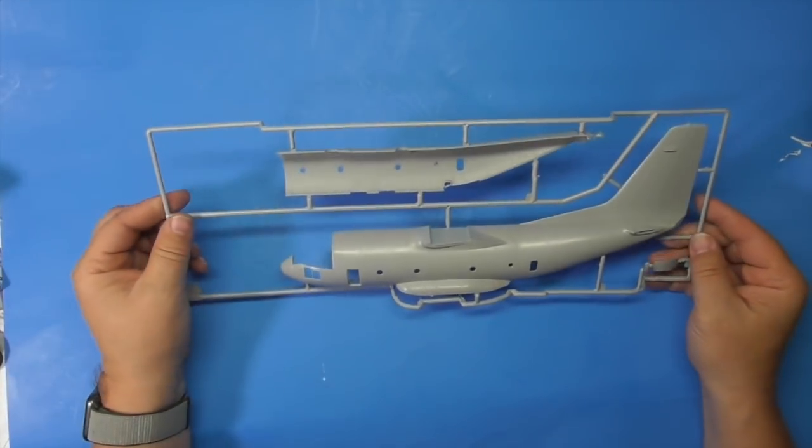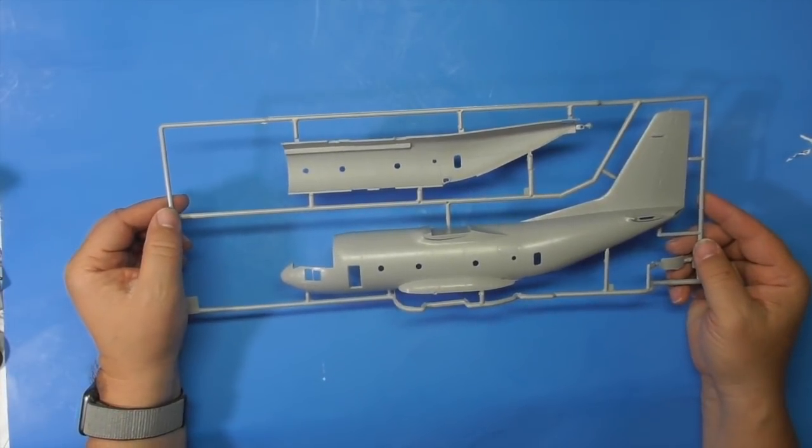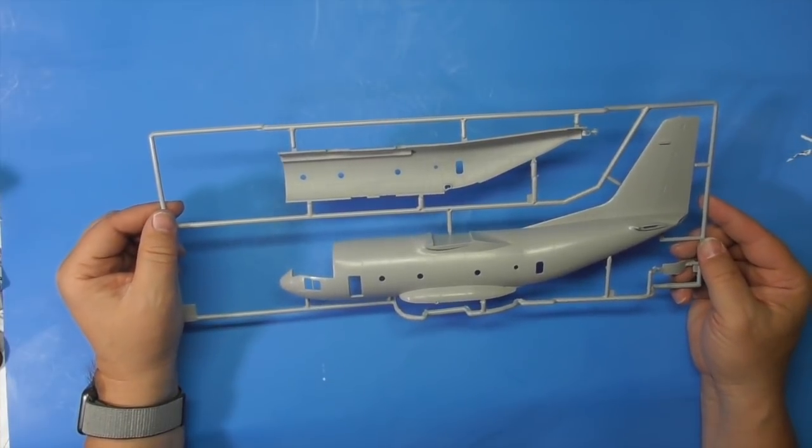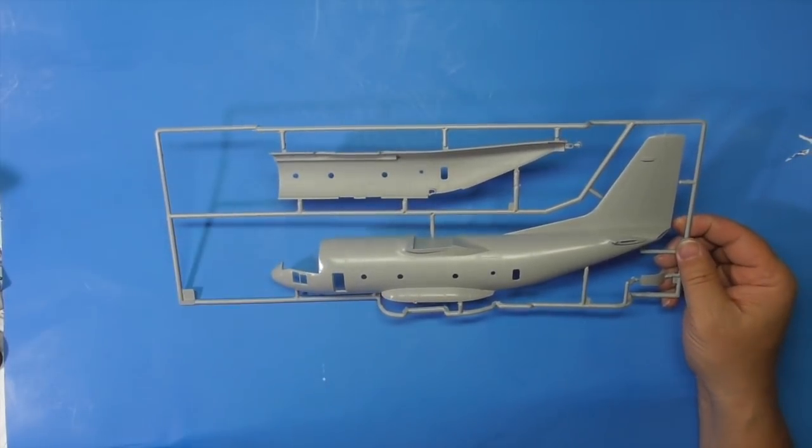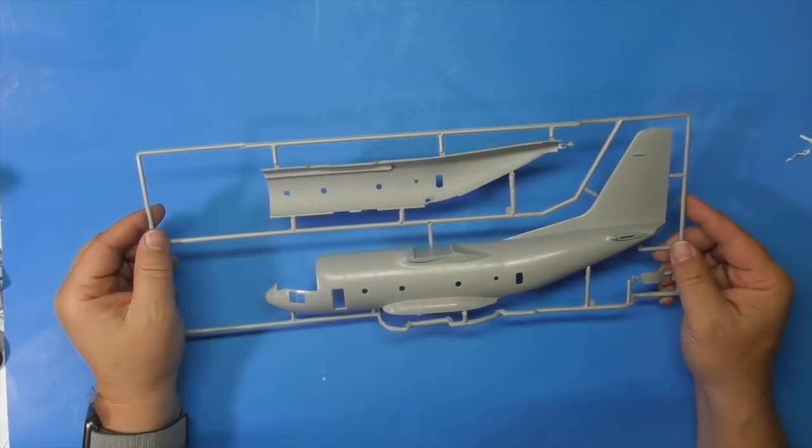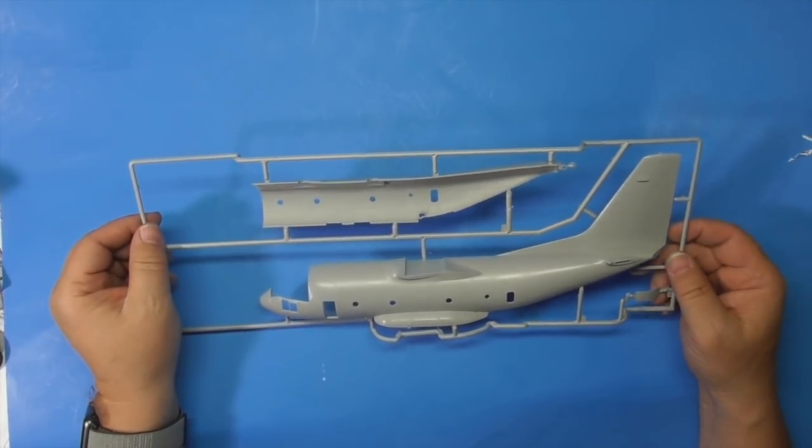There's about ten sprues in here. We're going to start with the fuselage. It's got nice recessed detail so the kit's got to be relatively new. I looked at the box and it's got a 2017 copyright date on it.